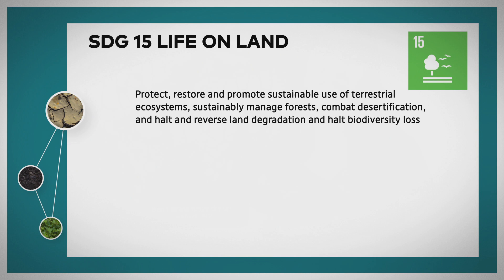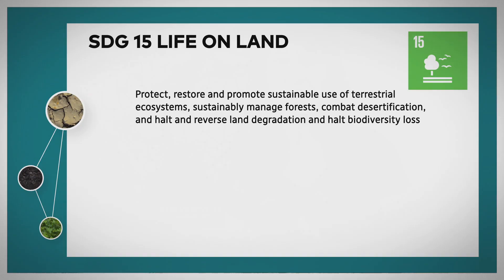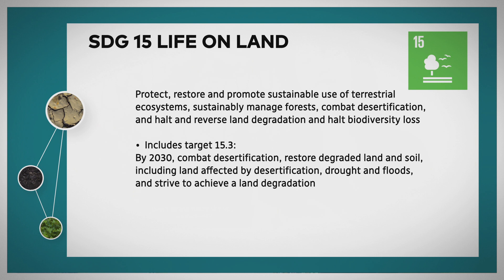I mentioned the Sustainable Development Goals, and one in particular is of interest to people focused on land issues: Goal 15, Life on Land. Goal 15 sets out to protect, restore, and promote the sustainable use of terrestrial ecosystems, to sustainably manage forests, combat desertification, and halt and reverse land degradation and biodiversity loss. Each SDG has targets to assess progress. Target 15.3 is to, by 2030, combat desertification, restore degraded land and soil — including land affected by desertification, drought and floods — and strive to achieve a land degradation neutral world. The word land comes up many times, showing that land issues really are on the global political agenda.